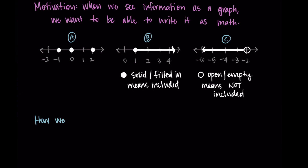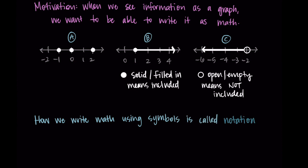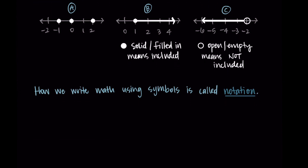I've also been using this word notation — let's make sure we know what that is. Basically, how we write math using symbols is called notation. I think of notation as to notate or to take notes on; it's basically just a way for us to represent math with symbols. Often we also have some sort of standard convention for notation, but with anything there's always going to be personal preference or different options.